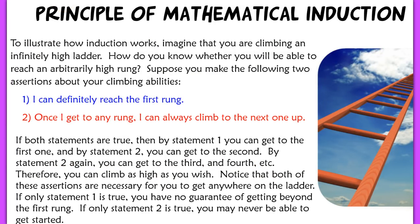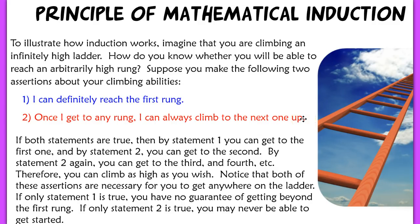To illustrate how induction works, imagine that you're climbing an infinitely high ladder. How would you know whether you're able to reach a really high rung? We're going to assume two things about your climbing abilities. One, you can definitely reach the first rung. Two, once you can get to any rung, you can always climb to the next one up. If both statements are true, then by statement one you can get to the first rung, and by statement two you can get to the second, third, fourth, fifth, et cetera.